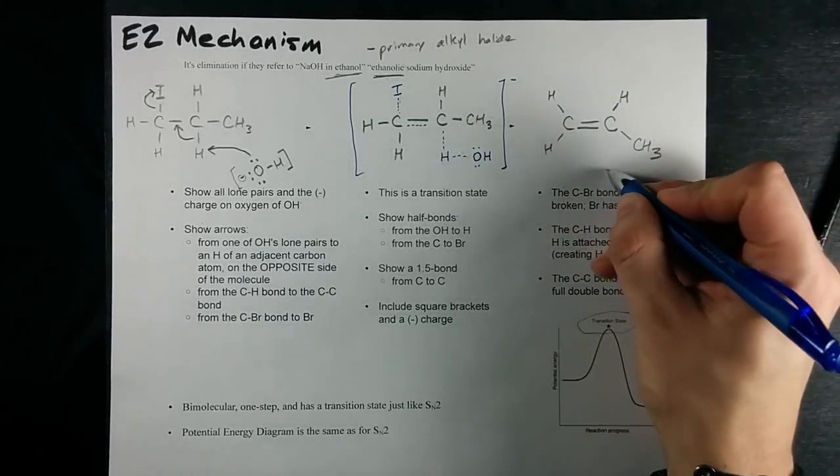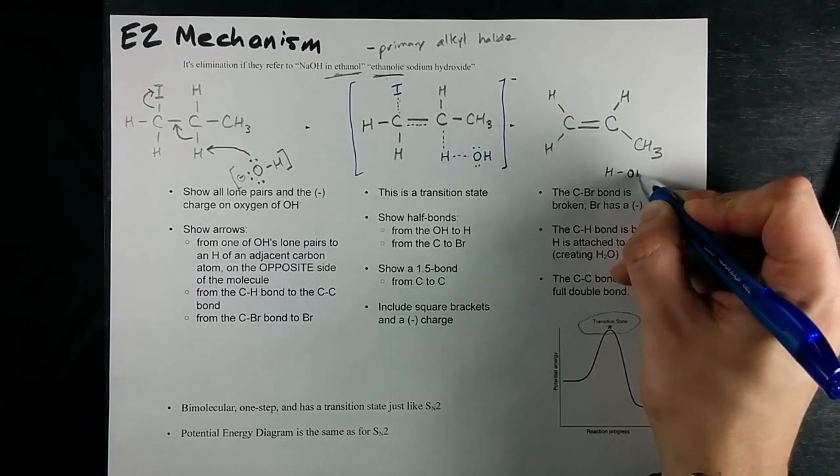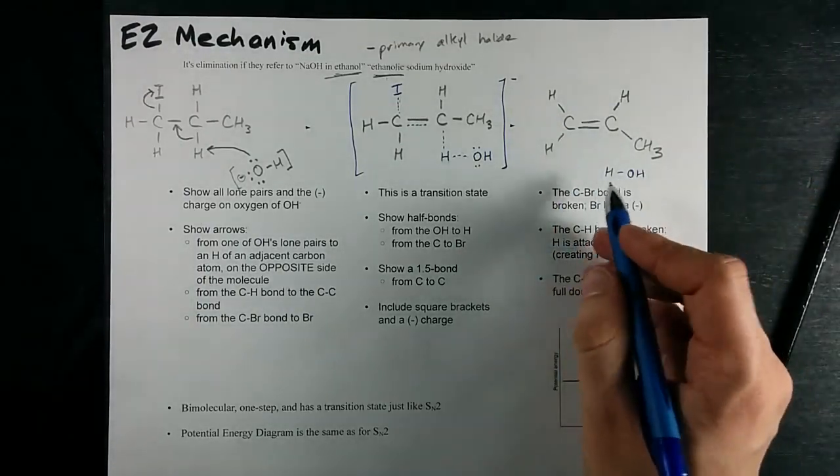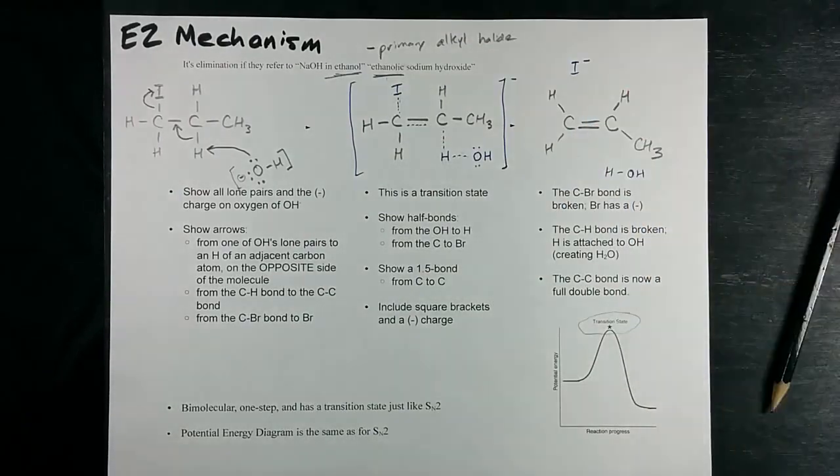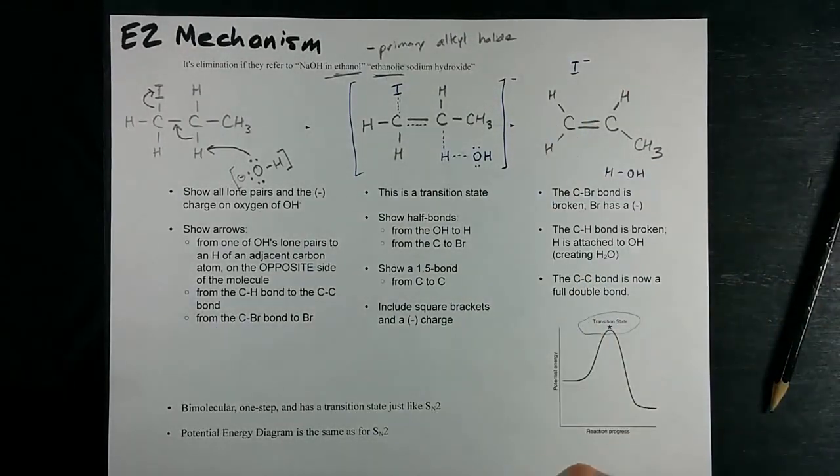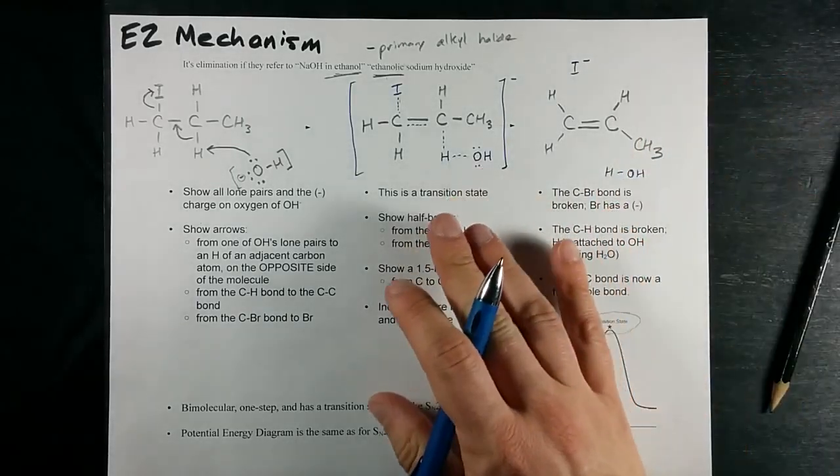In the end, I end up with this. My hydrogen is connected fully to my OH, so I've got water as a byproduct, and my iodide ion has a full octet of electrons up here.